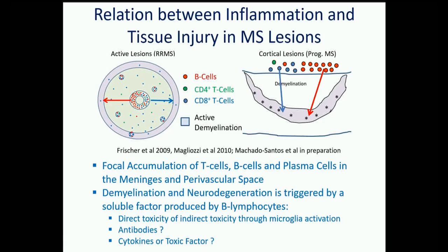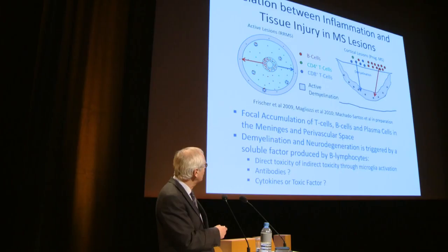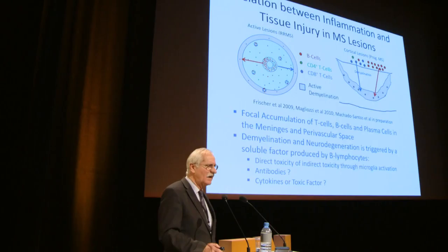Inflammatory cells are not homogeneously distributed in lesions — they predominantly accumulate in perivascular spaces and in cortical plaques in the meninges. In initial active lesions with early demyelination, T and B cell numbers are extremely low, arguing against direct tissue killing. For cortical lesions, good evidence suggests that cells in the meninges produce a soluble factor that diffuses into cortical tissue and induces demyelination directly or indirectly through microglial activation.